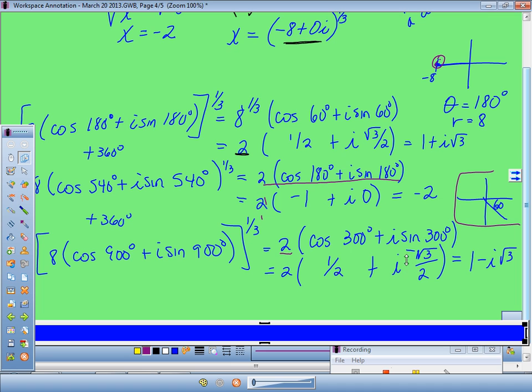Now, in class today, they said, but whoa, wait a minute. You can keep adding 360s forever. Wouldn't you keep getting different answers? And no, you don't. Once you've found the 3 you need, if you keep going, if you add another 360, take it times a third, all that good stuff, you'll just start to get these same answers repeatedly again. It'll cycle through these same answers over and over as long as you want to sit there and work it.